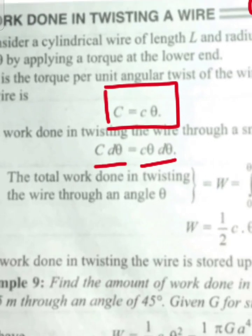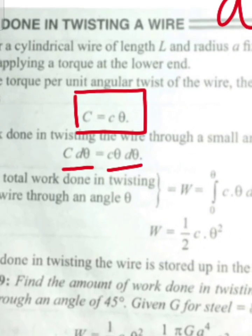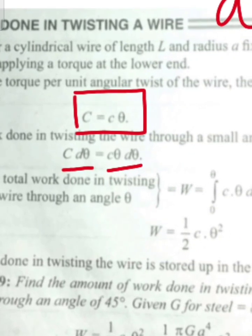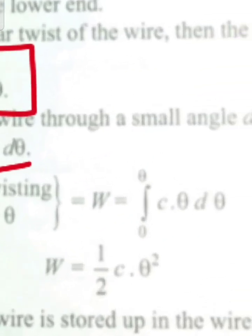So the total work done in twisting the wire: W equals integration of C theta d theta, with limits 0 to theta.